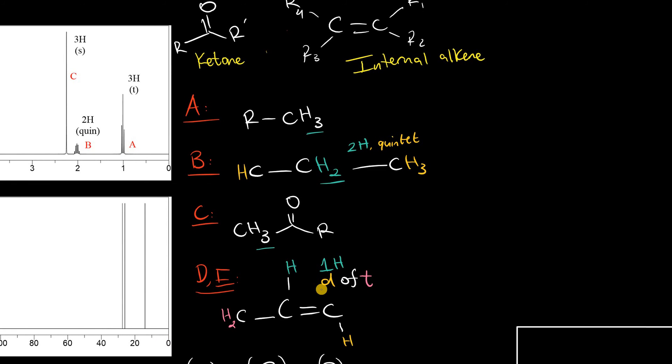What that means, is if I have a ketone here, for example, and I put in my methyl group, which is this 3H singlet, the alkene must be as close to the ketone as possible, like we were saying.